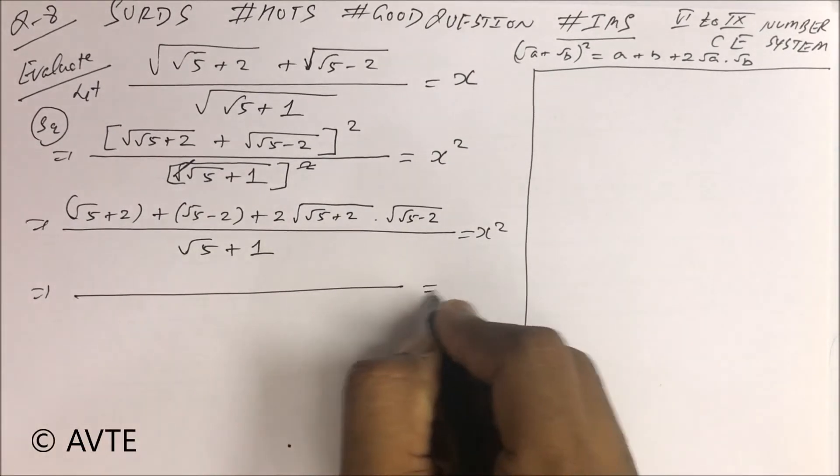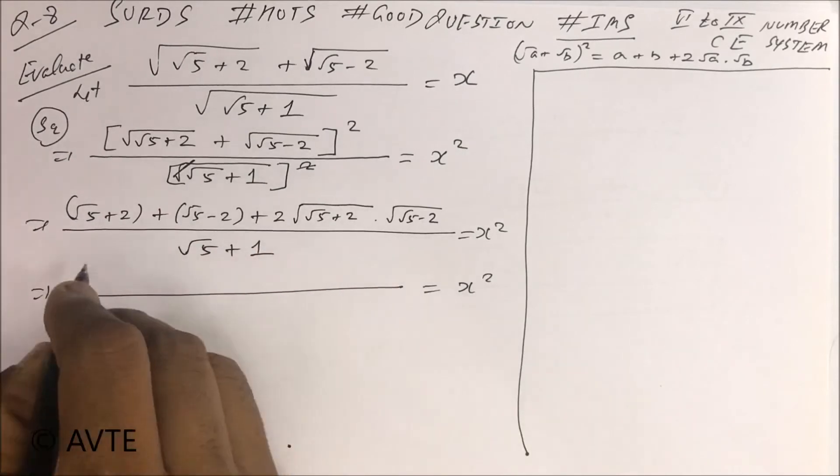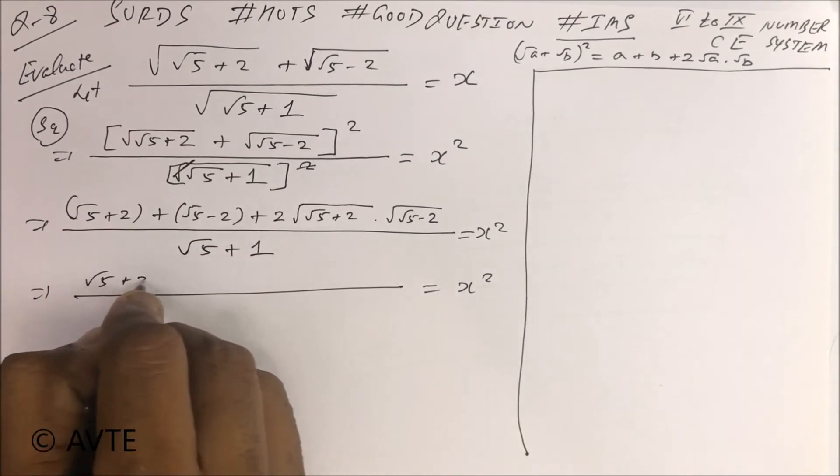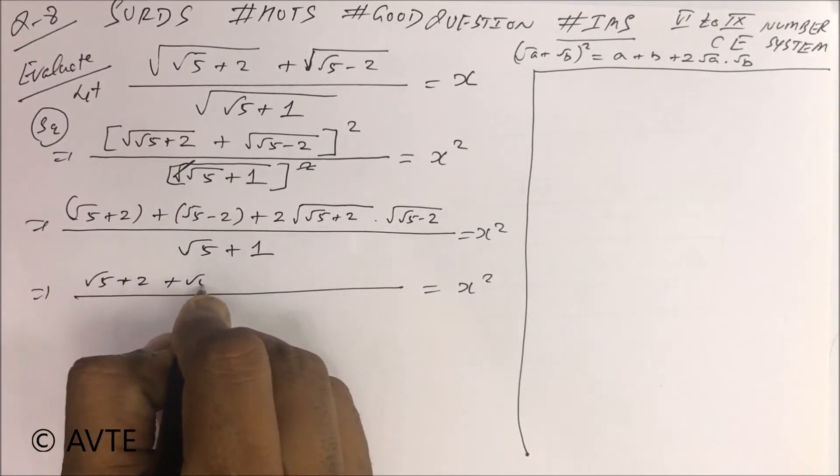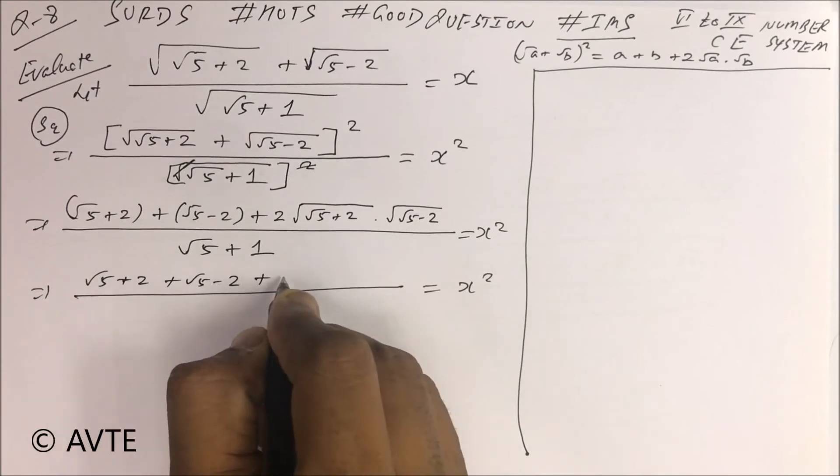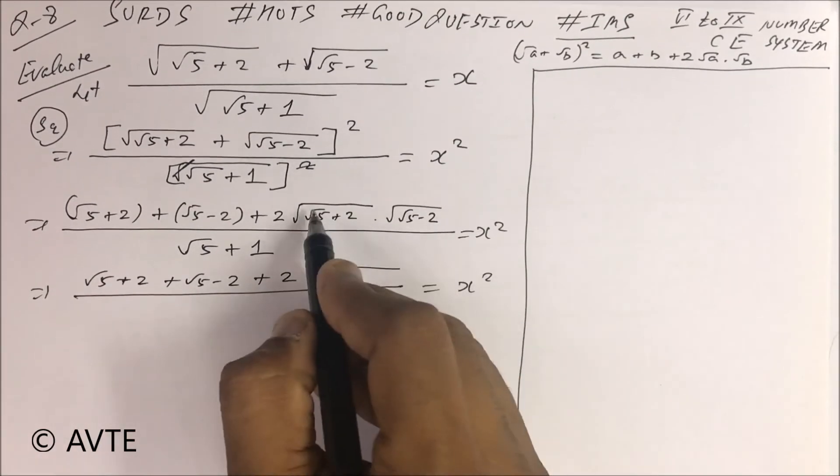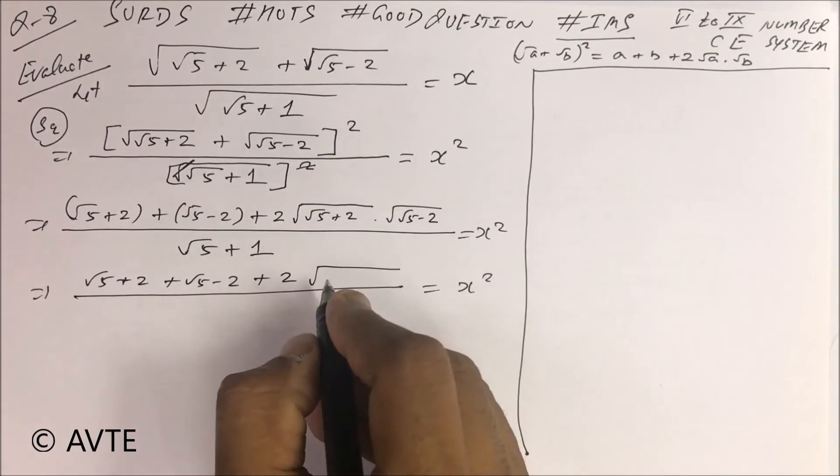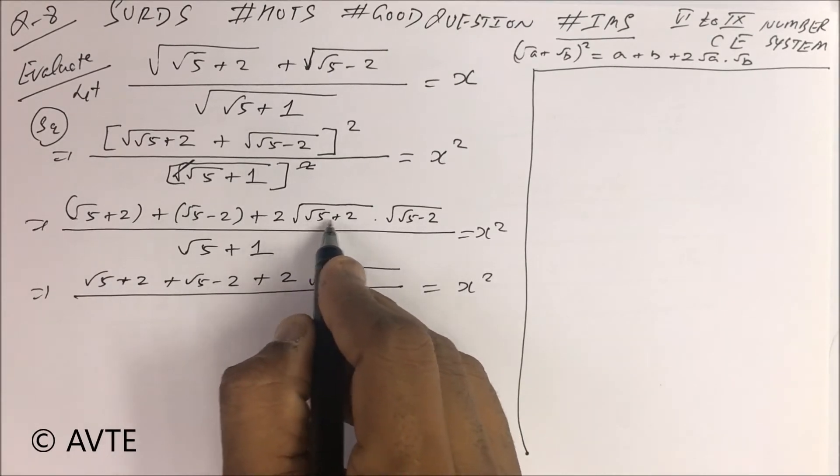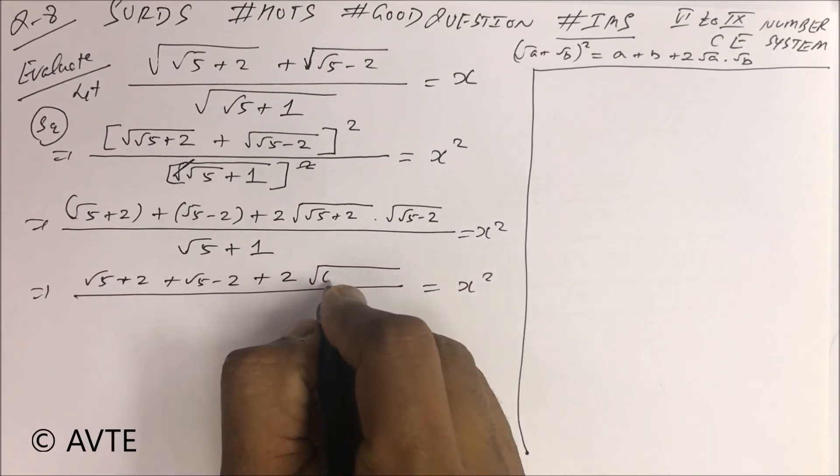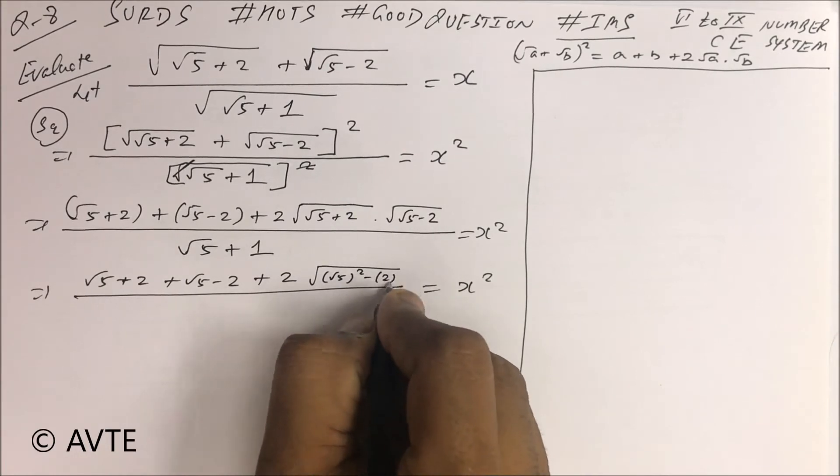So when you open the brackets, you open the brackets, this is √5 + 2 + √5 - 2 plus 2 times, because this is √A into √B and inside it is (√5 + 2)(√5 - 2). It is (√5)² - 2².